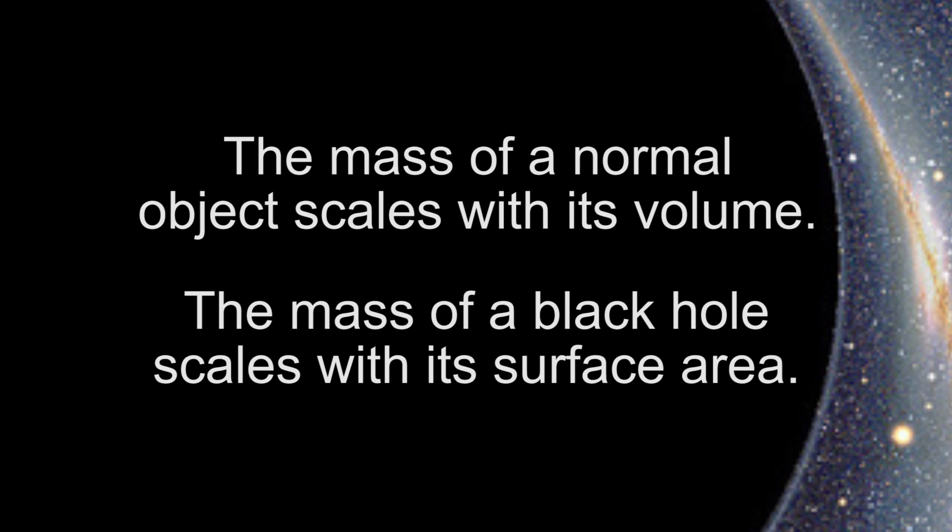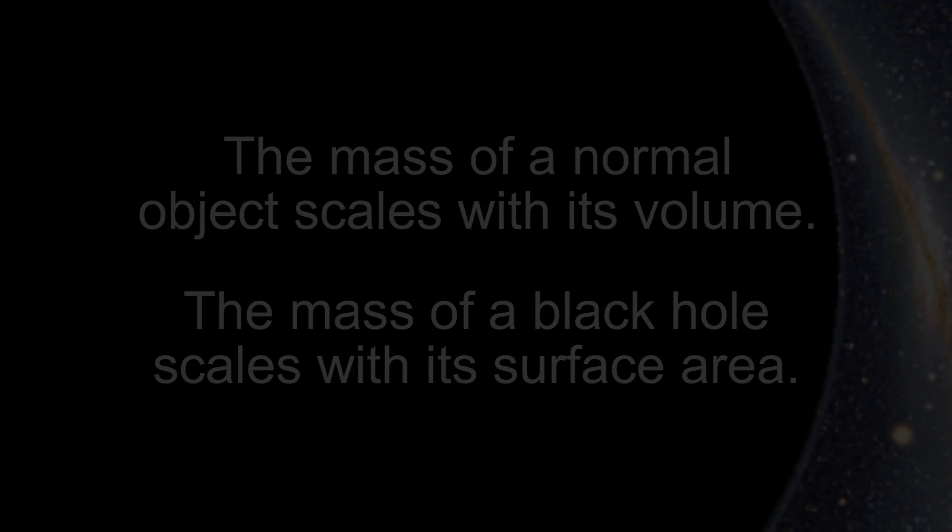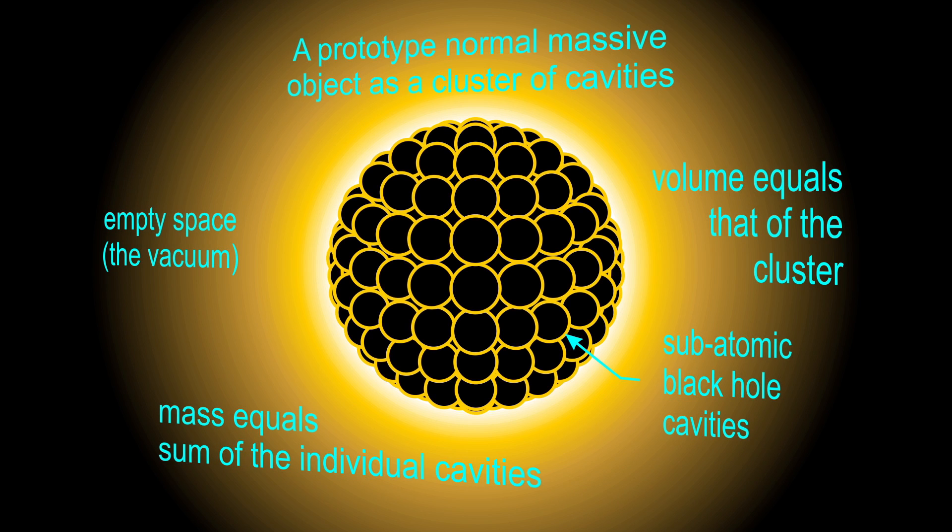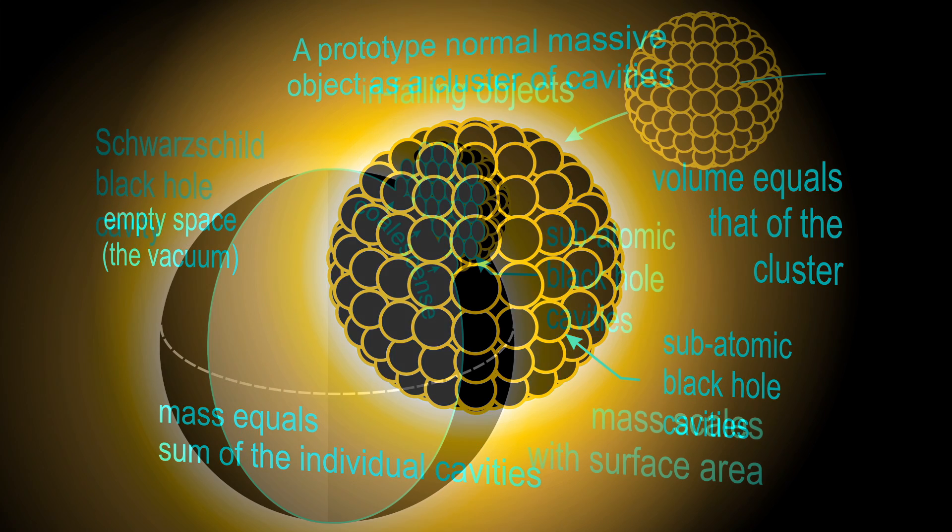Viewed from the perspective of the cavitation theory of matter, the issue resolves in a simple and intuitive way. If a normal object is constructed, something along the lines of the prototype shown here, its mass would equal the sum of the masses of the individual cavities, but its volume would be that of the entire cluster. Its volume would then scale with its mass, as observed for normal objects.